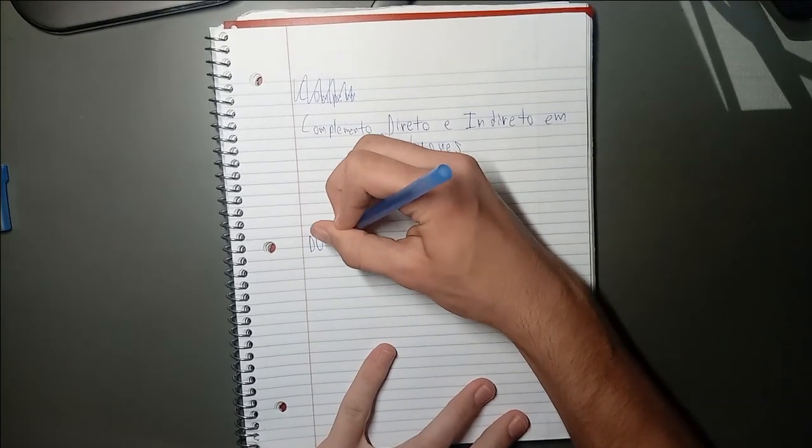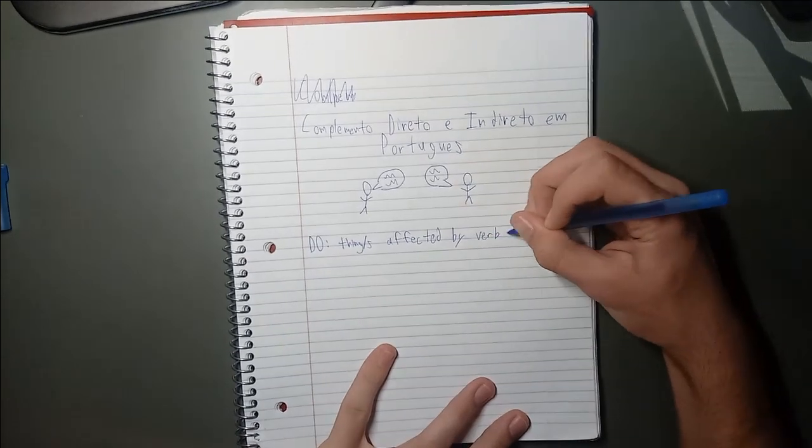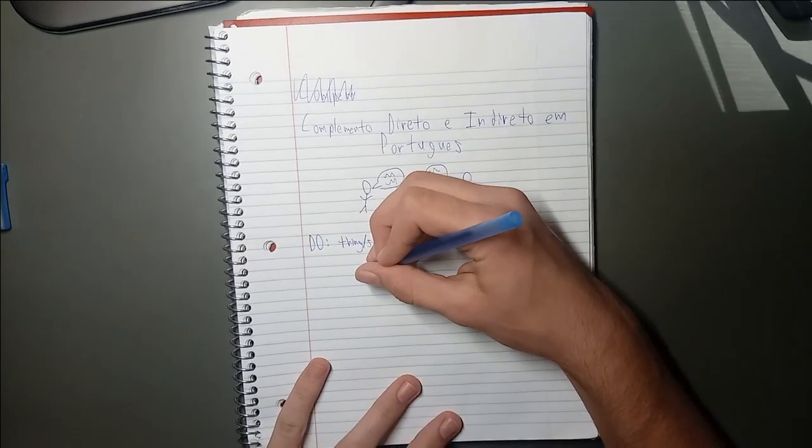Let's go over direct objects first, in English. A direct object is a thing or things being affected by the verb or verbs in a sentence. Here are some examples of sentences with direct objects in English first.